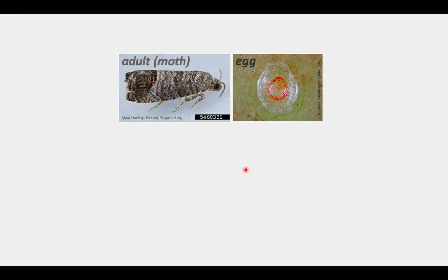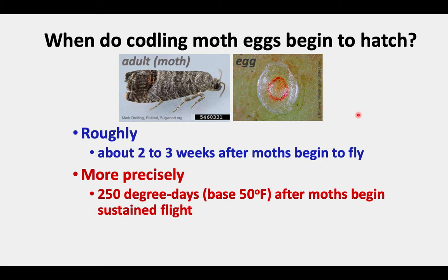Here is the adult moth again — very small, only about a quarter of an inch, and its eggs are even smaller. As you can see in this picture, they are nearly transparent. So even with a hand lens and a lot of time, you would have a very hard time finding these eggs. So we want to know: when do codling moth eggs begin to hatch?